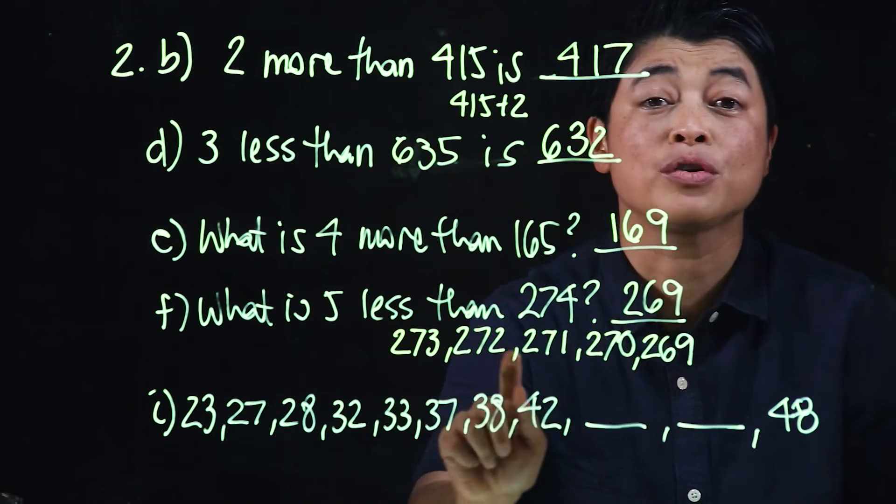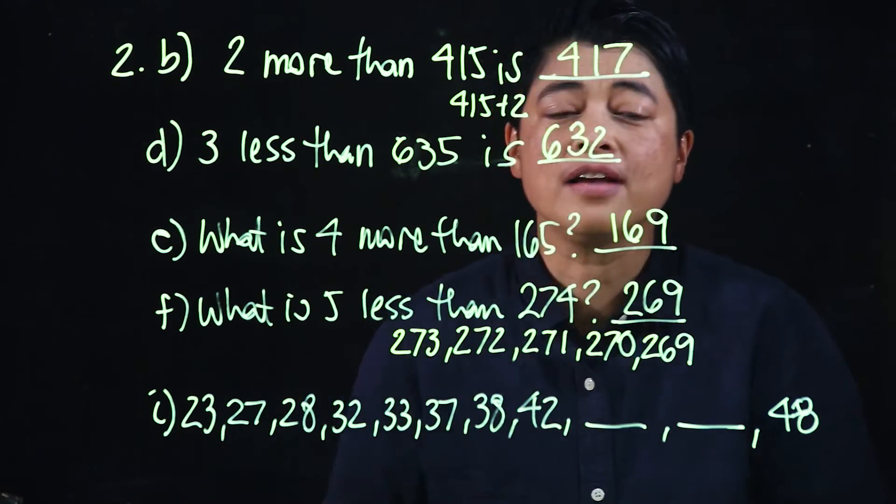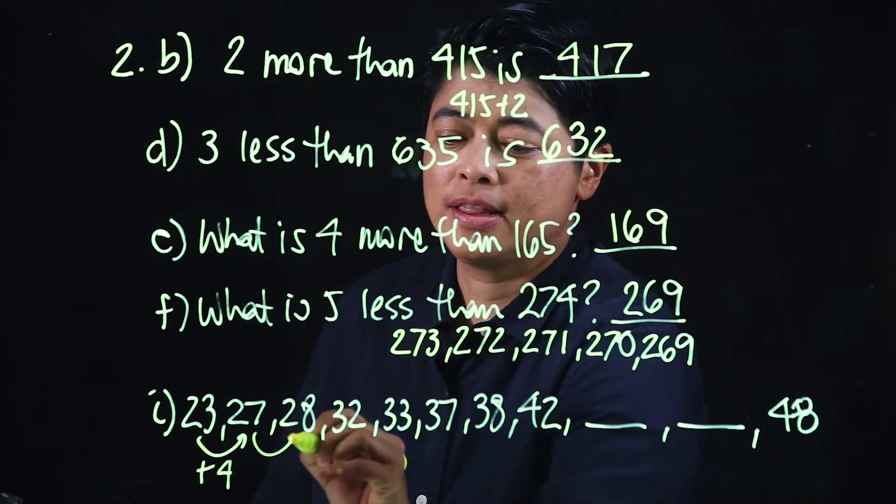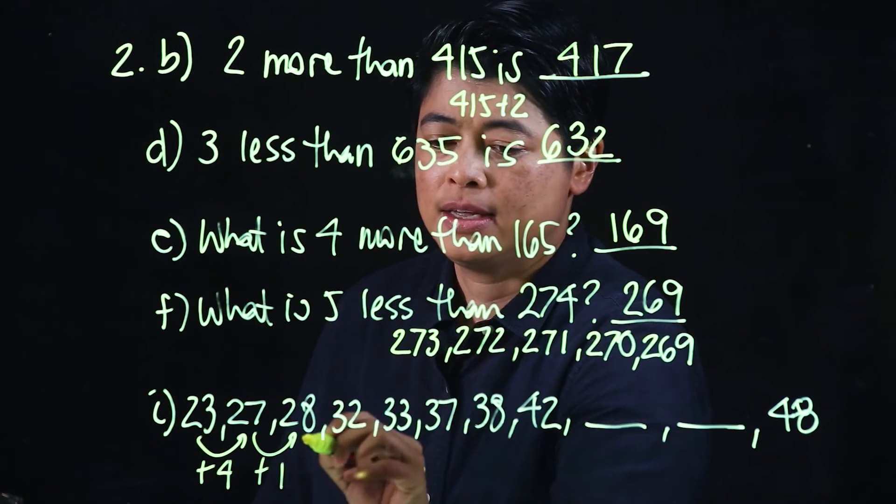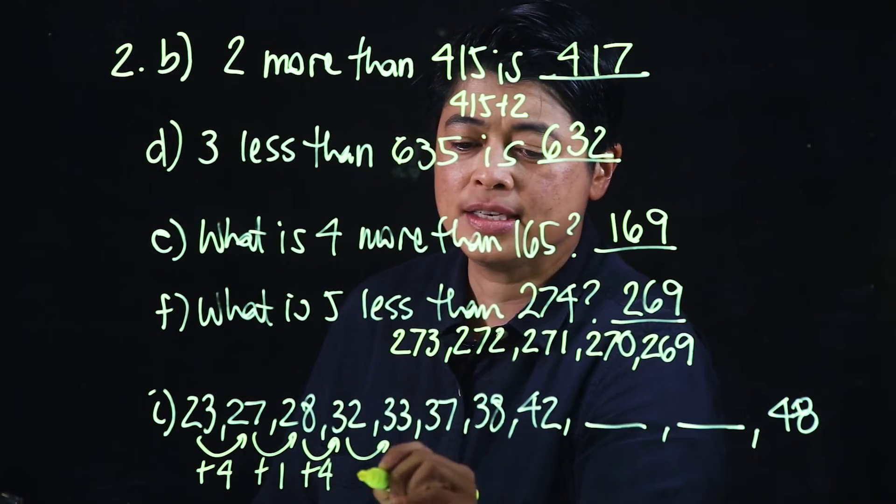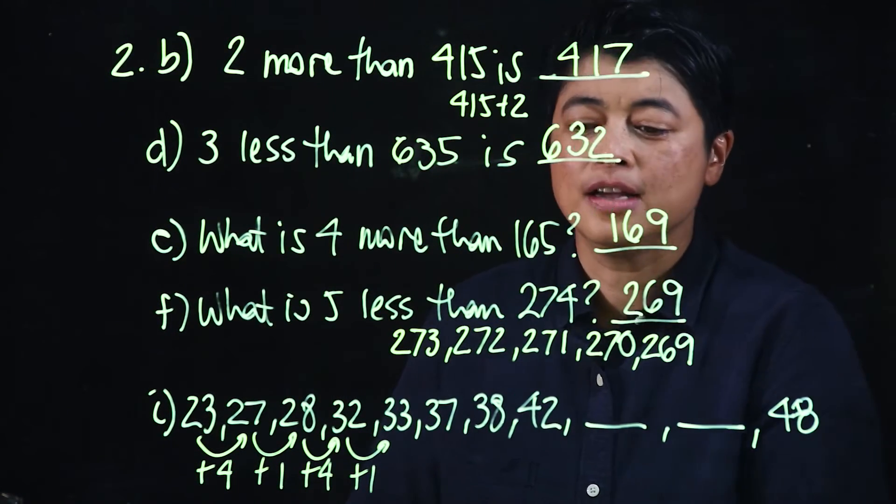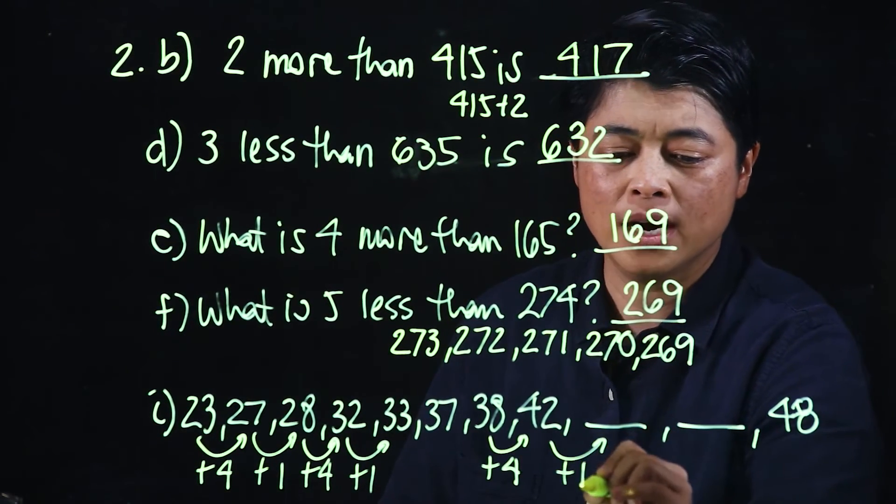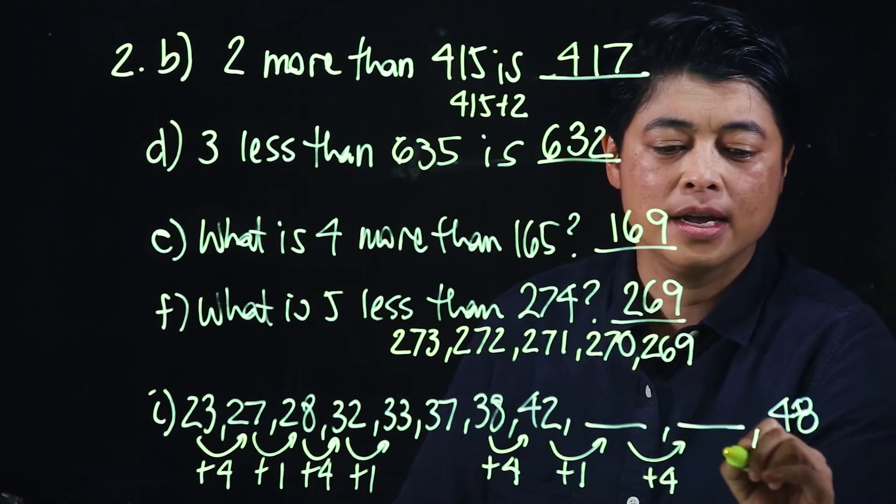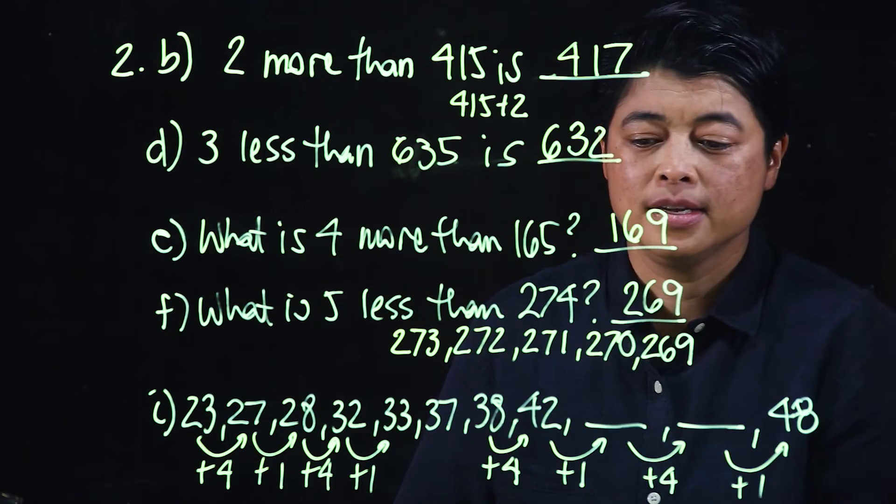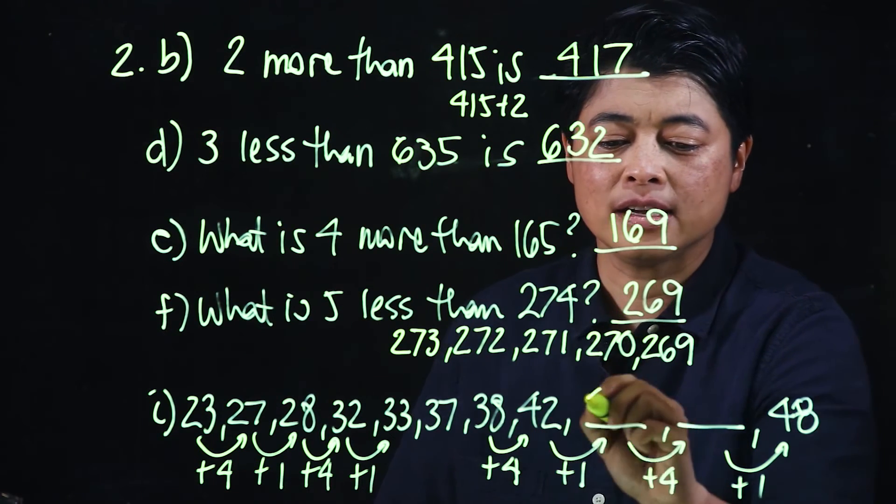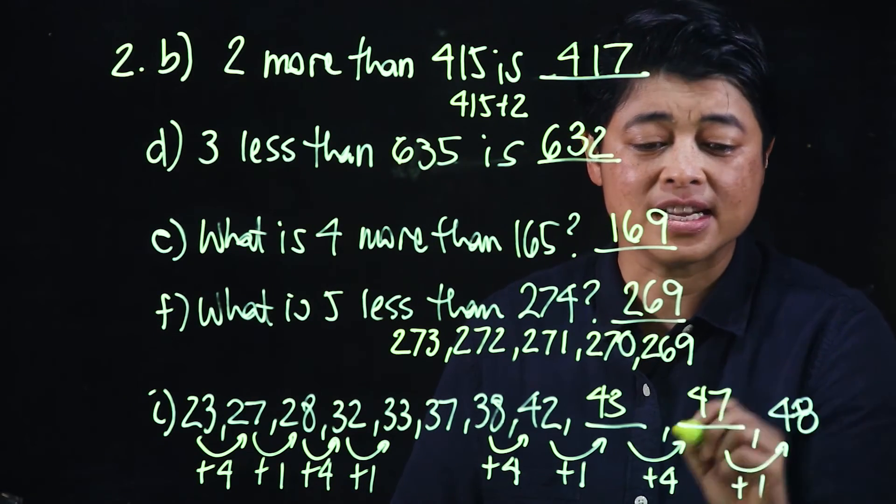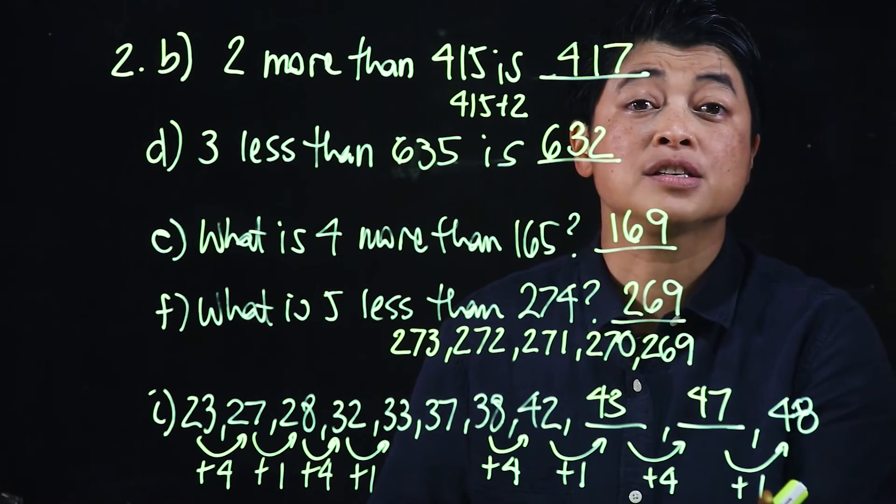Here we are looking for patterns. Clearly, this is plus 4, this is plus 1, this is plus 4, this is plus 1. So our pattern should be: this is plus 4, the next one should be plus 1, the next one should be plus 4, and the next one should be plus 1. So therefore, 1 added to that is 43, 4 added to 43 is 47, and confirming with a plus 1 would mean it's 48.